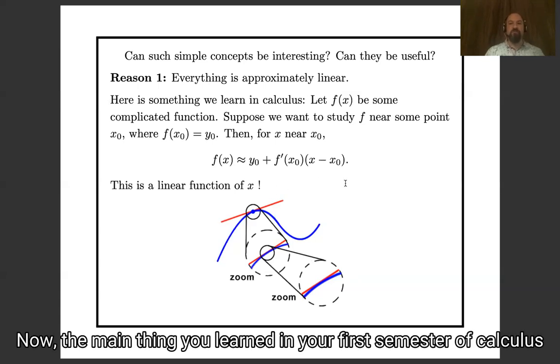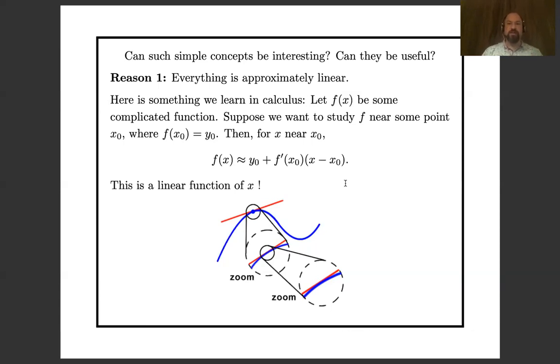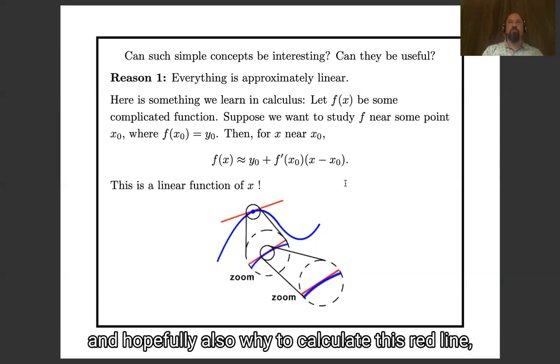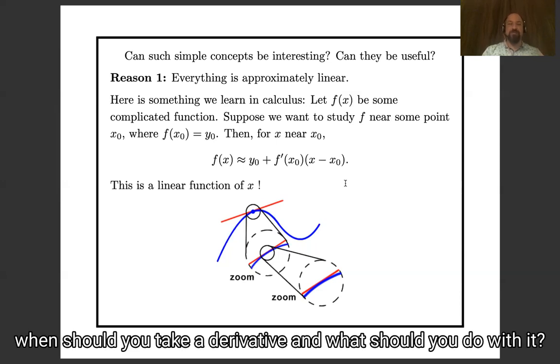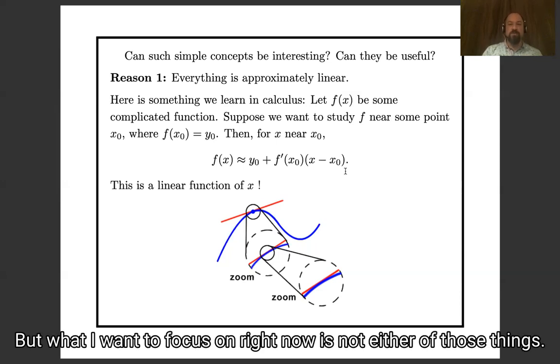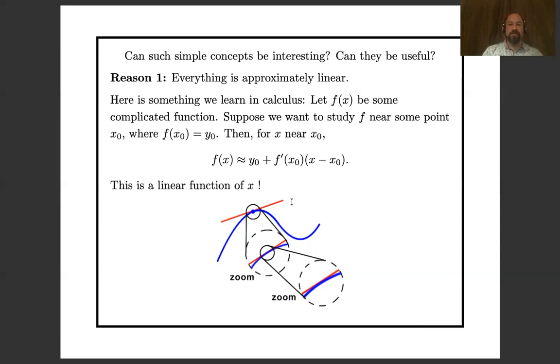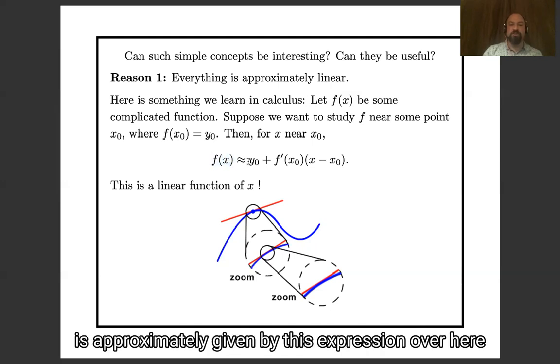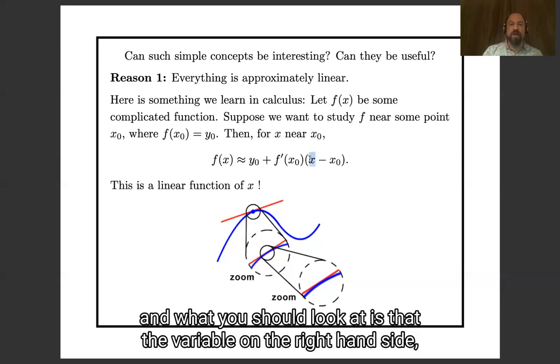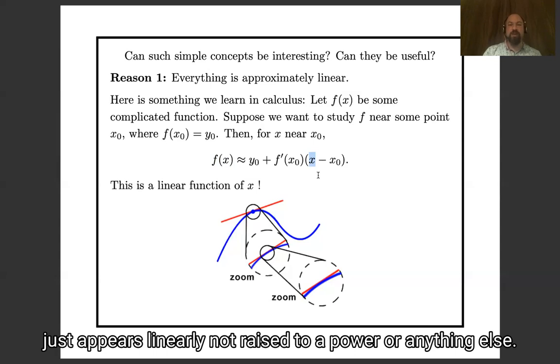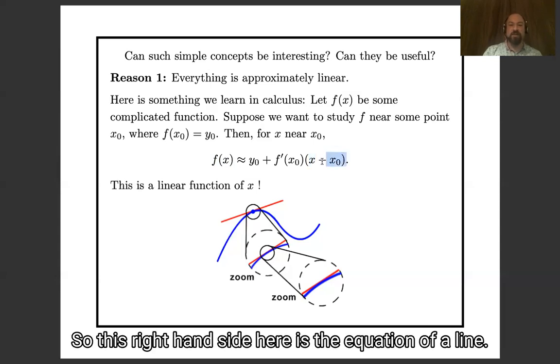So this complicated blue curve zoomed in close up looks a lot like this straight red line. Now, the main thing you learn in your first semester of calculus is how to calculate this red line, that is how to take a derivative, and hopefully also why to calculate this red line. When should you take a derivative, and what should you do with it? But what I want to focus on right now is that our approximation is a line. And here we have its equation. The equation says that f of x, the complicated curve, is approximately given by this expression over here. And what you should look at is that the variable on the right-hand side, the x, just appears linearly, not raised to a power or anything else. So this right-hand side here is the equation of a line.